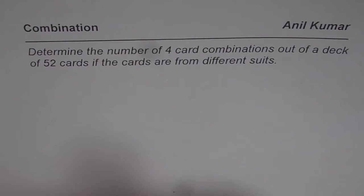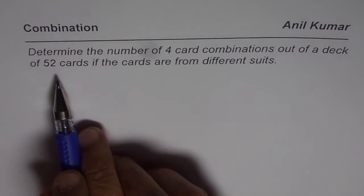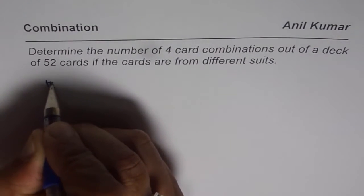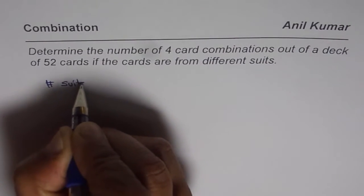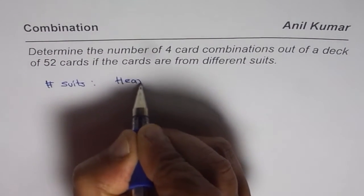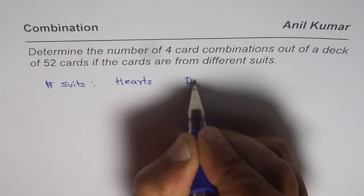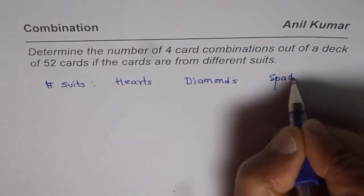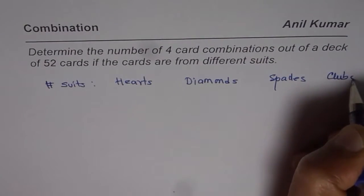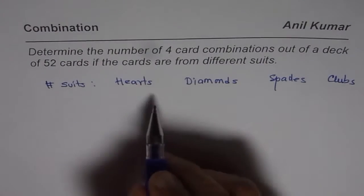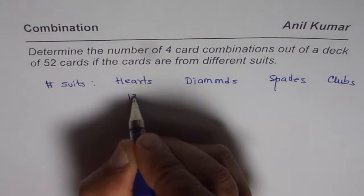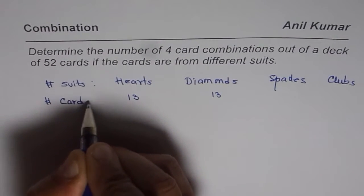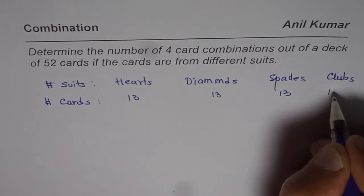As you know, in playing cards we have four different suits. The four suits are hearts, diamonds, spades, and clubs. In every suit we have thirteen cards — thirteen cards of hearts, thirteen of diamonds, thirteen of spades, and thirteen of clubs.